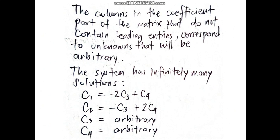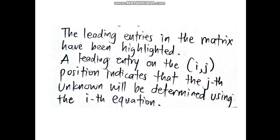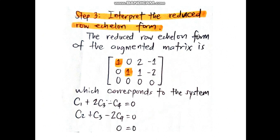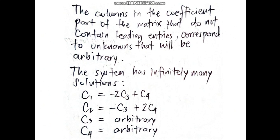While c1 and c2, we apply the properties of equality. c1 is negative 2c3 plus c4, coming from c1 + 2c3 - c4 = 0. Meanwhile, c2, applying the property of equality, is equal to negative c3 plus 2c4.